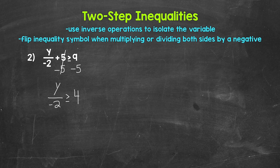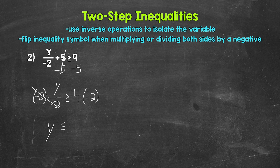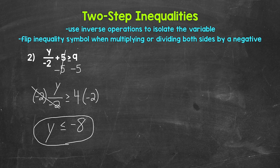Now we have y divided by negative 2 is greater than or equal to 4. Since y is being divided by negative 2, we undo that using the inverse operation — multiplication. So multiply both sides by negative 2. Remember, when we multiply or divide both sides of an inequality by a negative, the inequality symbol flips. The negative 2s cancel on the left, y is isolated, the symbol flips, and 4 times negative 2 gives us negative 8. So y is less than or equal to negative 8.